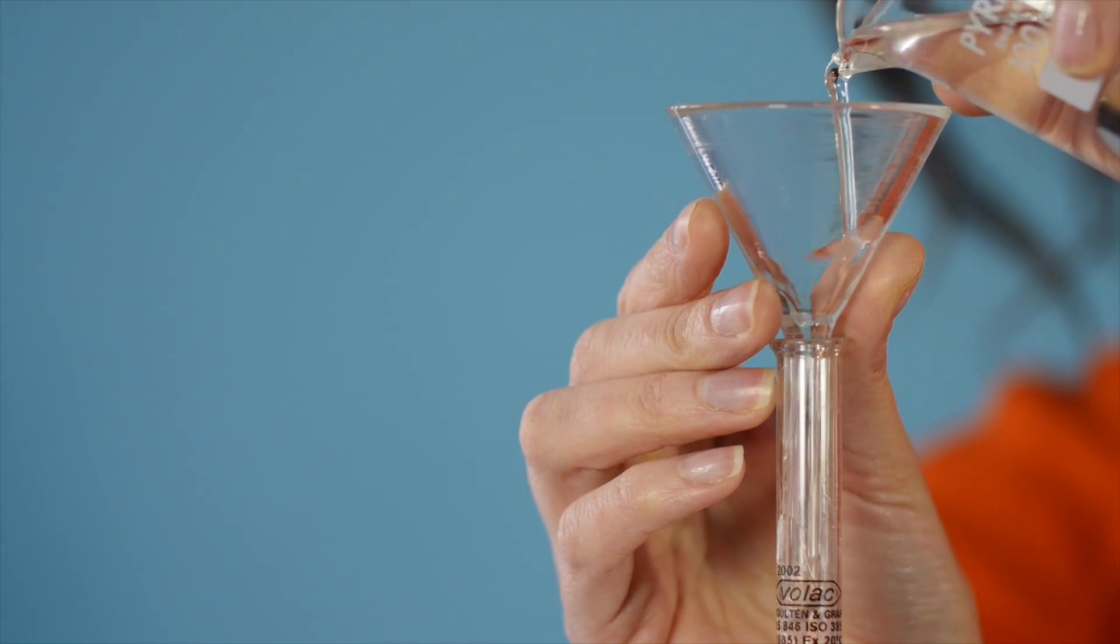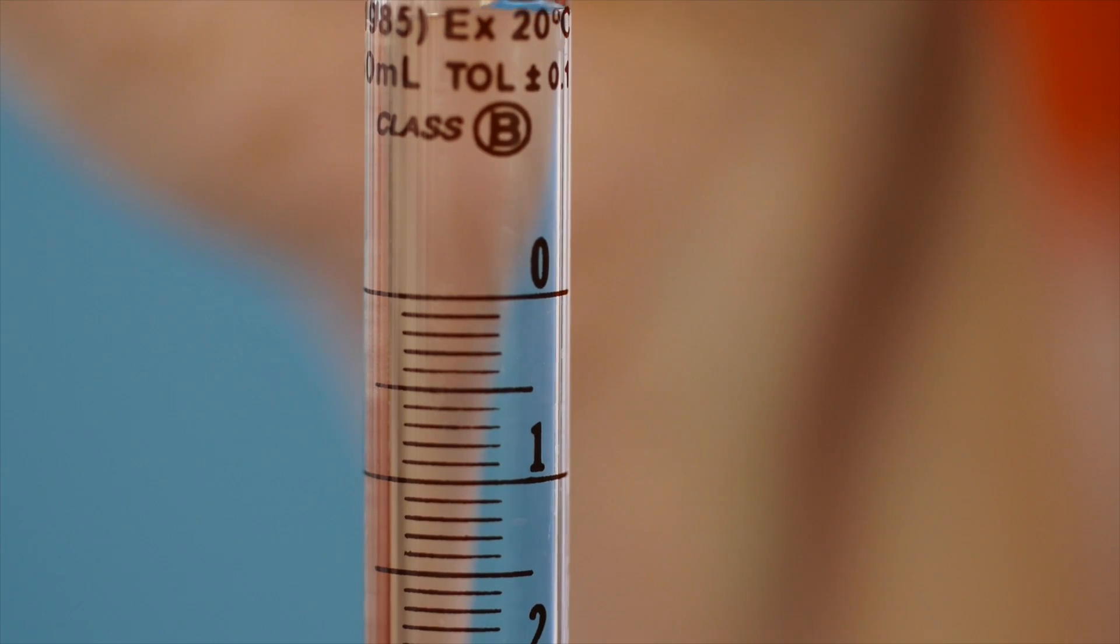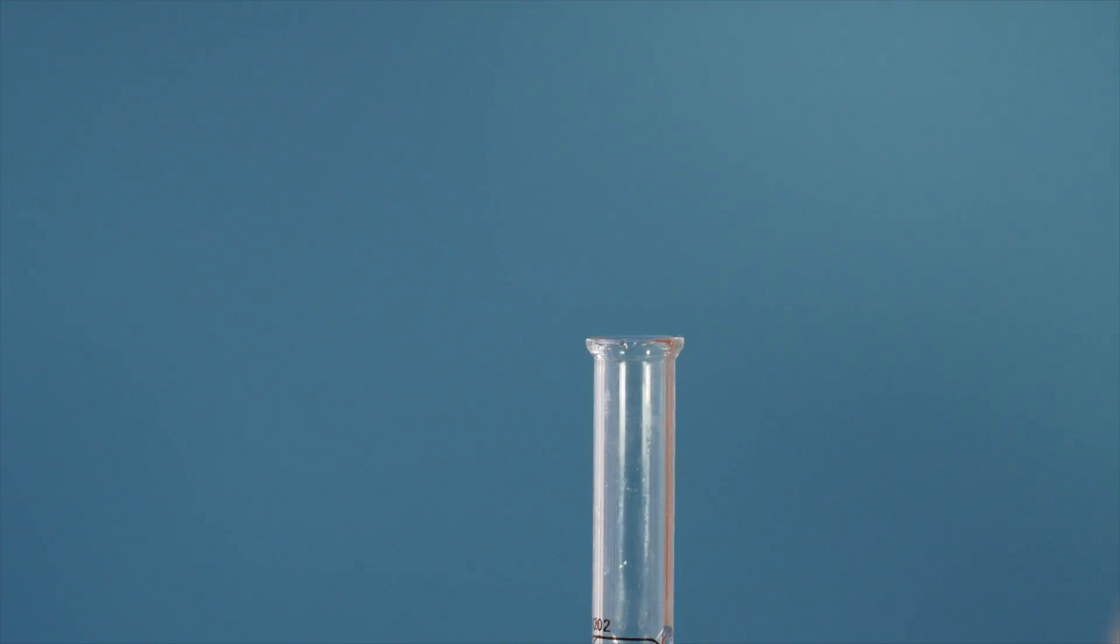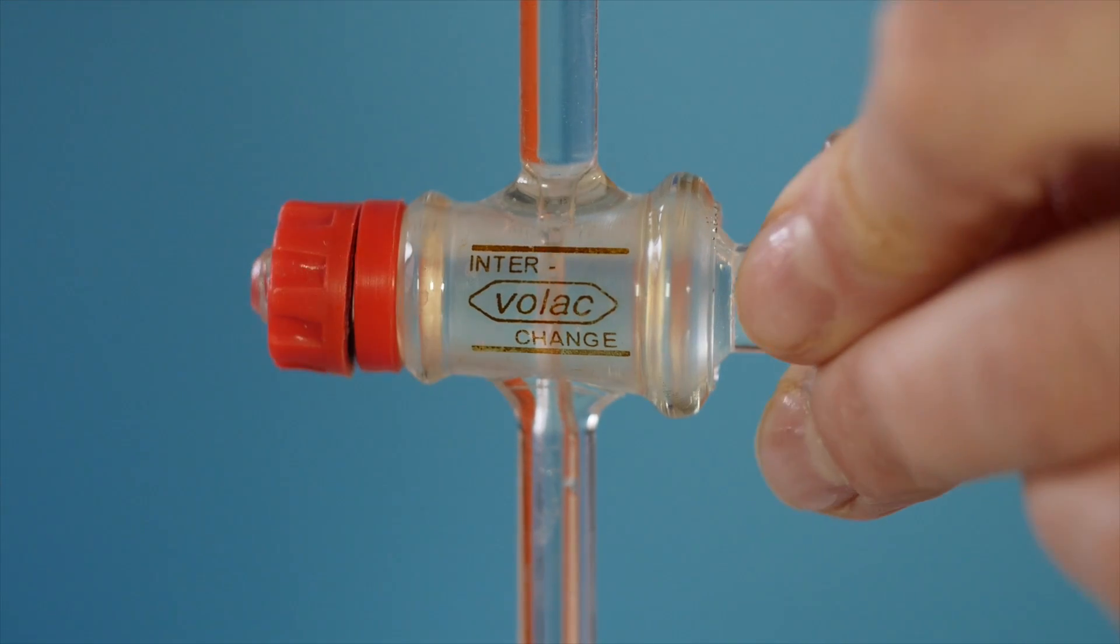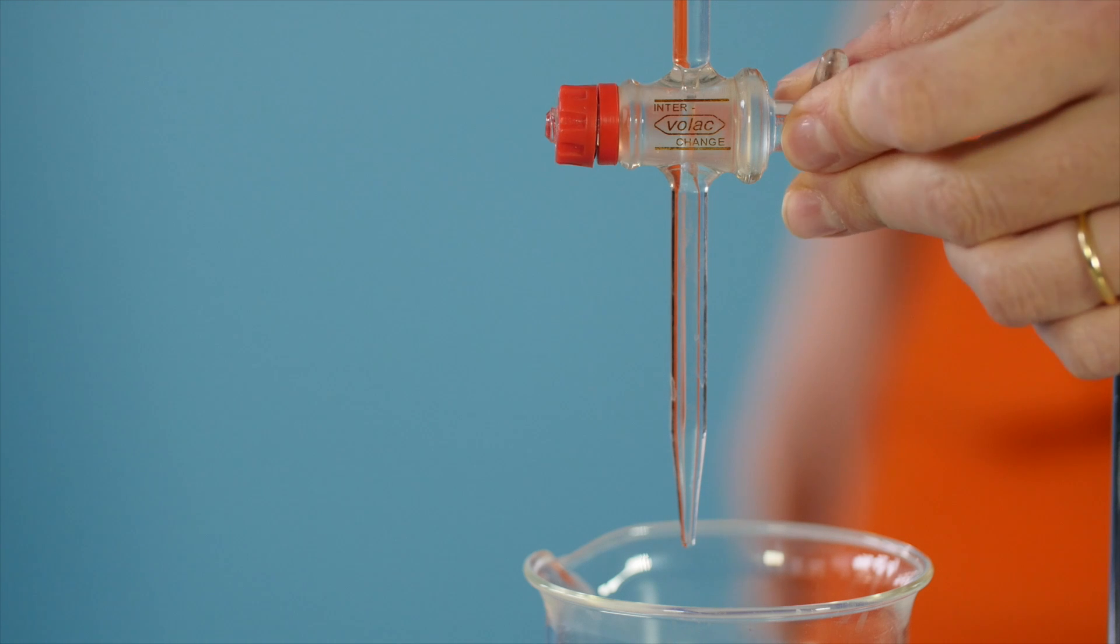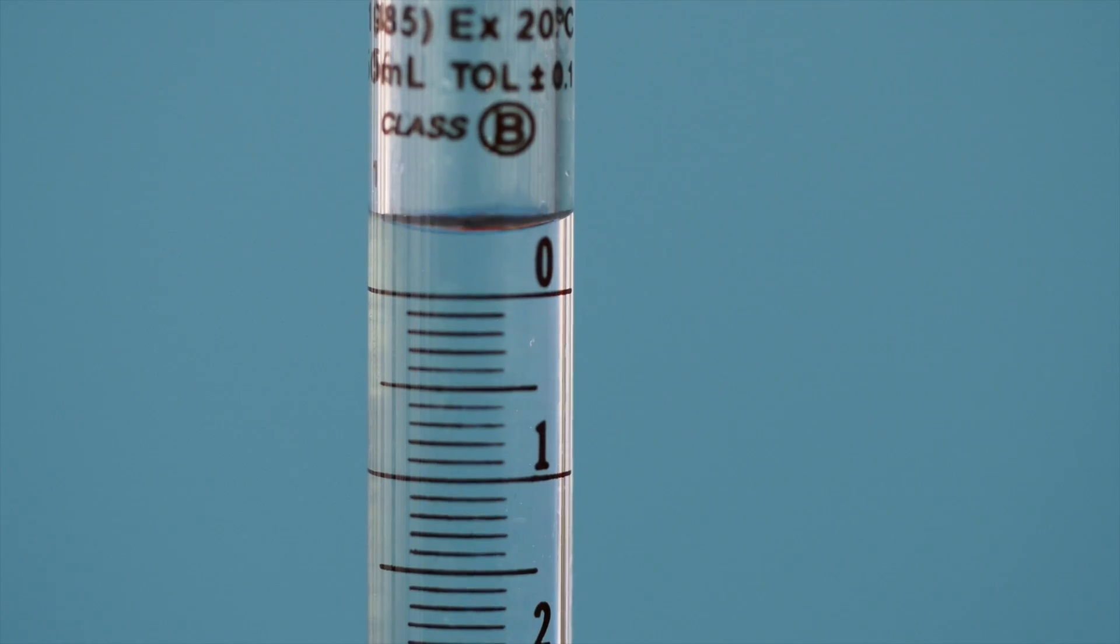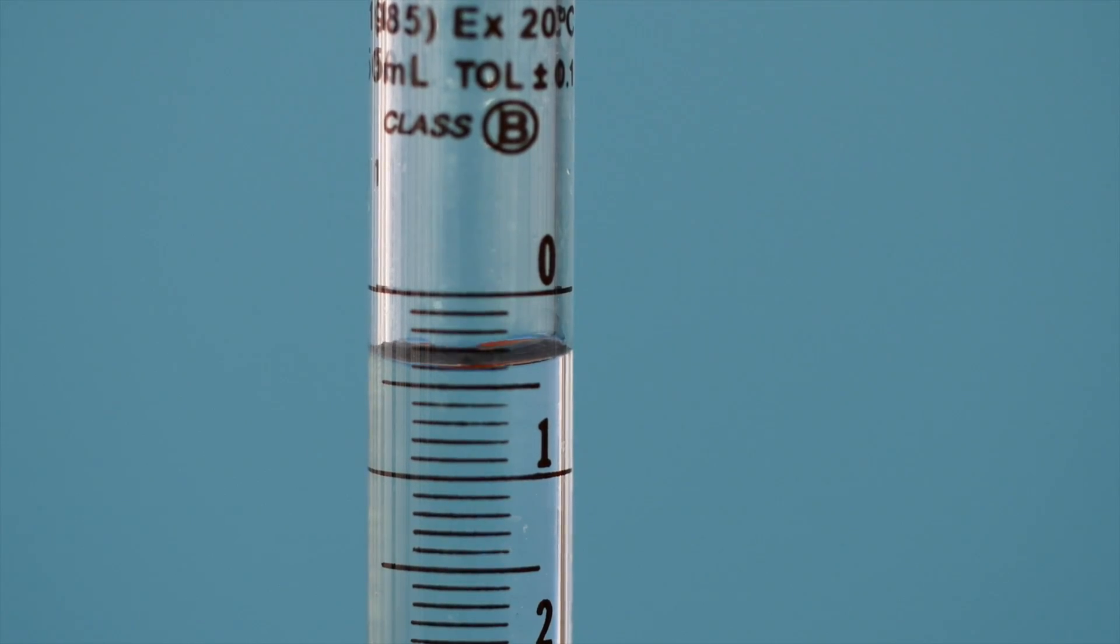Fill the burette with sodium carbonate solution above the zero mark and remove the funnel. Using the tap at the base of the burette, allow the sodium carbonate solution to flow into the beaker until the level of liquid is at or a little below the zero mark. Ensure there are no air bubbles in the nozzle. These can be removed by running a little more solution through the tap.